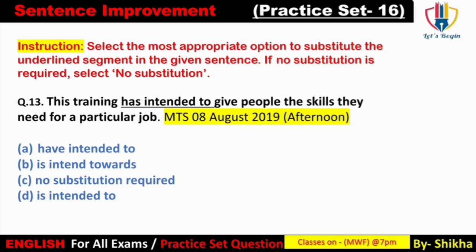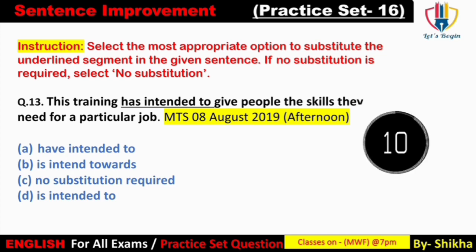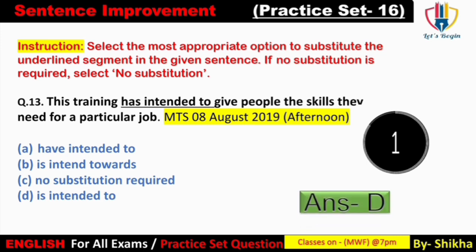Next: 'This training has intended to give people the skills they need for a particular job.' 'Intended' ka matlab hota hai irada — kuch irade se kuch kiya jata hai. Is sentence mein kaha gaya hai ki yeh training logon ko skill sikhane ke irade se banayi gayi hai. Yeh training kisi ke dwara banayi jayegi — khud nahi banayegi — isi liye iska passive form hona chahiye. Passive form mein diya gaya hai option D: 'is intended to.' Option A 'have intended' — active form, galat. Option B 'is intent' — verb 3 chahiye tabhi passive banega. Answer: option D — 'This training is intended to give people the skills.'